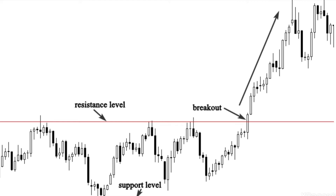The third way to trade a ranging market is to wait for a pullback after the breakout of the support or resistance level. The pullback is another chance to join the trend for traders who didn't enter on the breakout. Let's go to the next chart sample to show you what a pullback looks like.